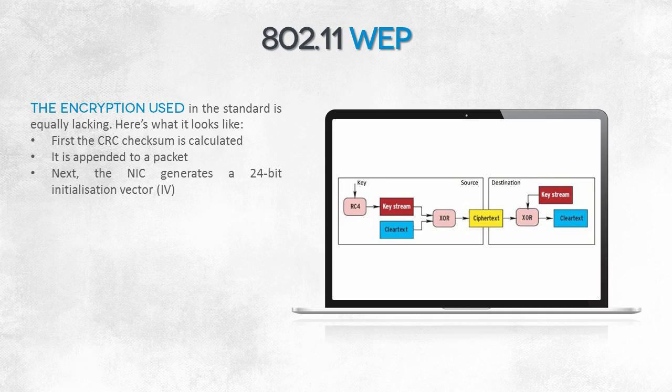The RC4 stream cipher is used for encryption. The secure use of the RC4 algorithm is based on the rule that the key shouldn't be used more than once to encrypt the same data. If this rule is flouted, breaking the ciphertext is trivially easy. RC4 is based on XOR operations.